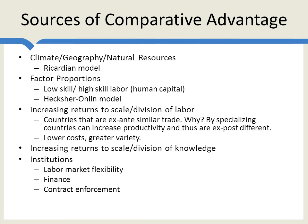Contract enforcement is another institutional factor. In some countries it's very difficult to enforce contracts, so they're going to specialize in production which doesn't require a big division of labor or a big division of knowledge — which can be done all within one family or one smaller firm, or where you require fewer contracts. If you require a greater division of labor over more firms, more parts of the country, more people, you're going to want to be in a country which has better contract enforcement. So for all of these reasons, these are all sources of comparative advantage.